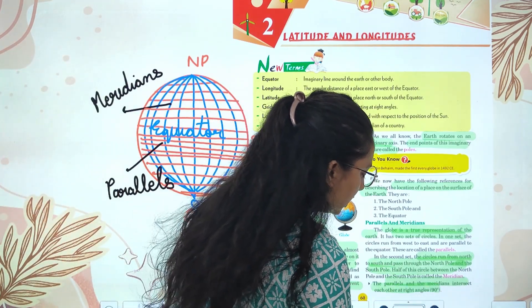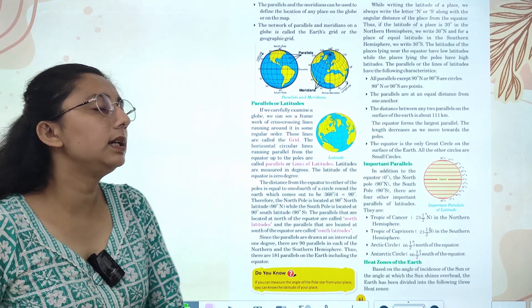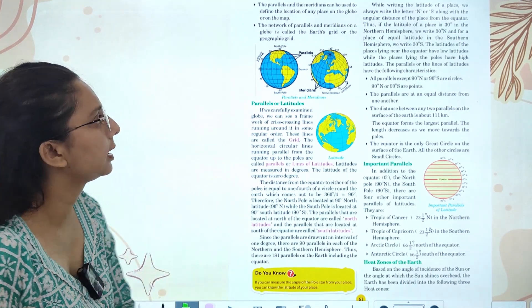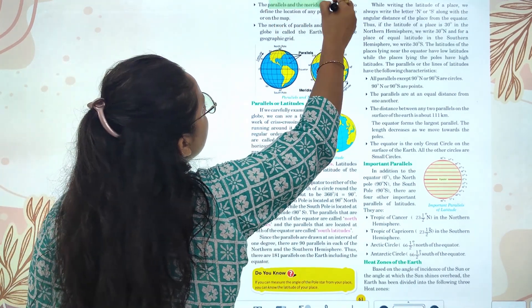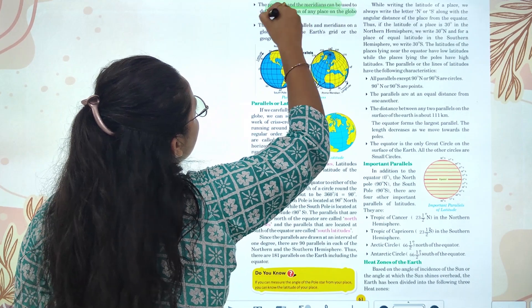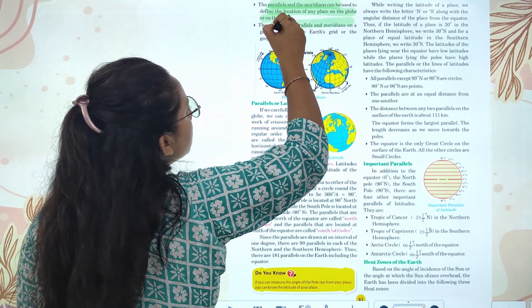The parallels and meridians intersect each other at an angle of 90 degrees. The parallels and meridians can be used to define the location of any place.